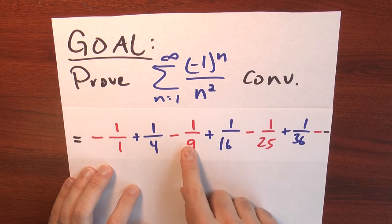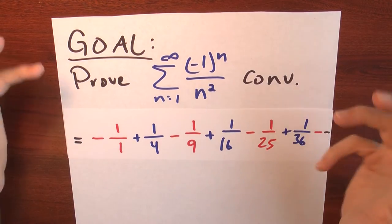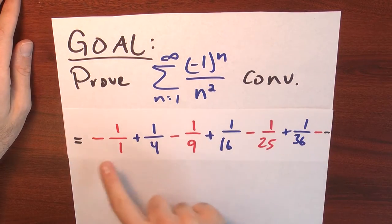It's minus 1 plus a fourth, minus a ninth plus a sixteenth, minus a twenty-fifth. I can only apply the comparison test if the terms were non-negative. And that's not the case here.